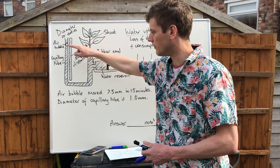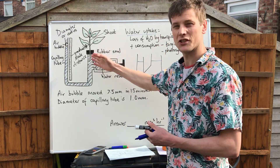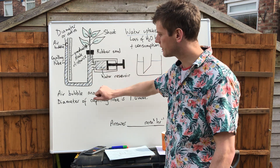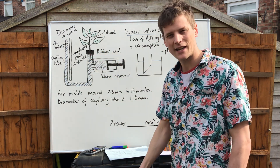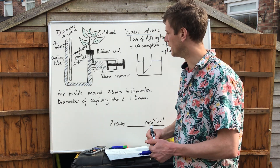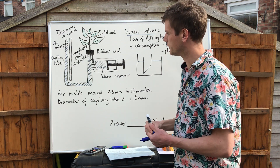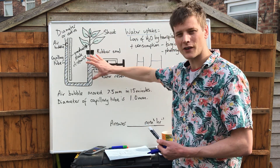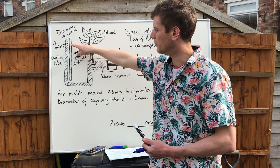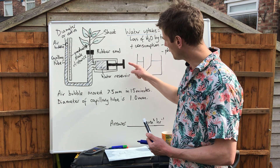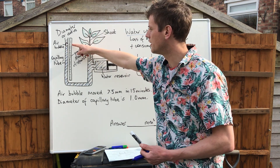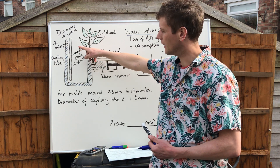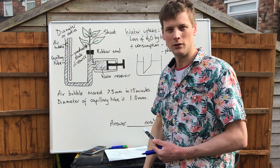The position of the air bubble needs to be marked at the start. What we tend to do is place the shoot into the potometer, then allow a five-minute equilibration period — this allows the temperatures of everything to become ambient, the same as room temperature. After that five-minute period, the position of the air bubble is marked on the graduated scale and the timer begins. Over a given time, the distance travelled by the air bubble is measured.